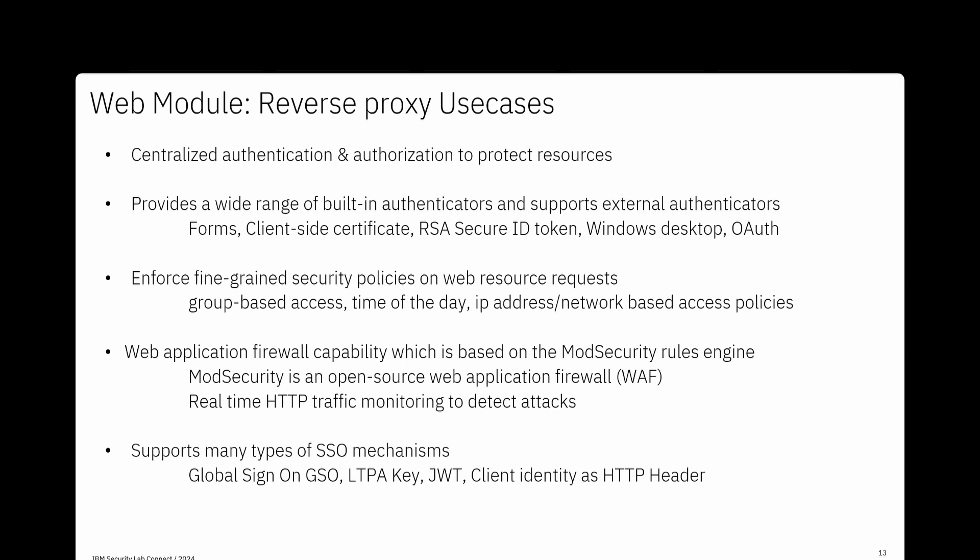Reverse proxy provides a wide range of built-in authenticators out of the box, such as form-based authentication, client-side certificates, RSA security tokens, Windows Kerberos-based single sign-on, and OAuth. For customers wanting their own authentication, they can leverage the external authentication interface on the reverse proxy, which redirects to a custom authentication module, and then passes session information back to the reverse proxy. It also helps to enforce fine-grained authorization security policies, which could be group-based access, time-of-day, IP address, or network zone.